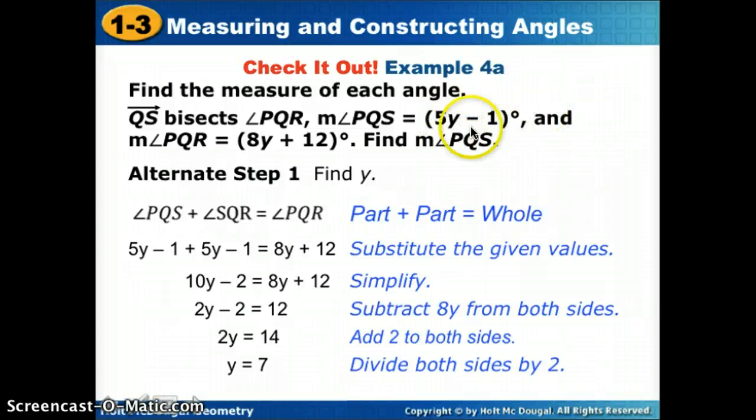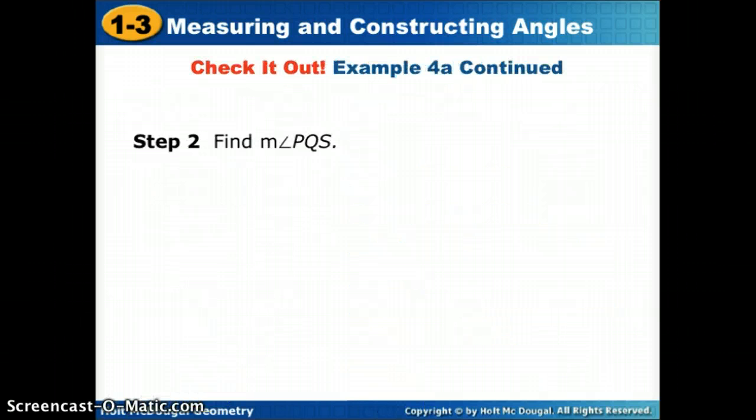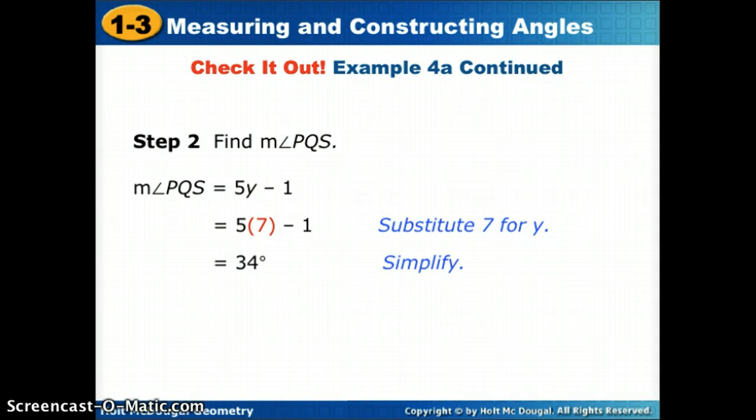Now remember, the problem asked for the measure of PQS. So we found the missing piece, the Y. Now we go back and see to find PQS. The measure they gave me was 5Y minus 1. And if Y is 7, I'm going to replace Y with 7 and simplify. So the value of the angle they asked for was 34. Take this concept slow. We'll work on it in class as well. Have a good night.